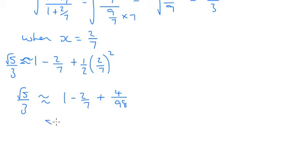So if we work that out, we get, so 1 minus 2/7 plus 4 over 98. That gives me the fraction of 37 over 49.